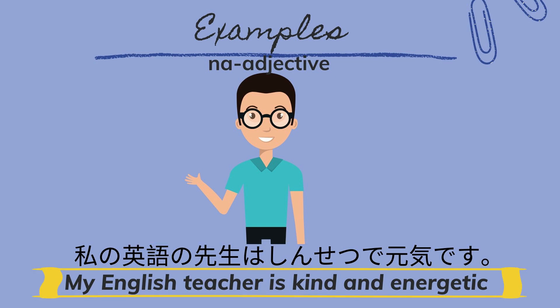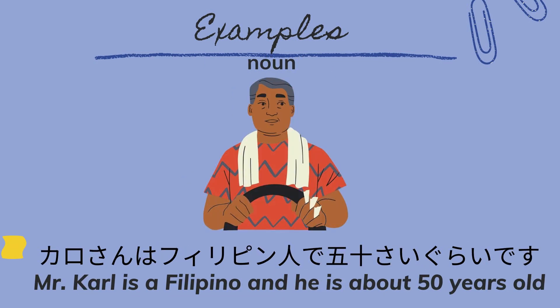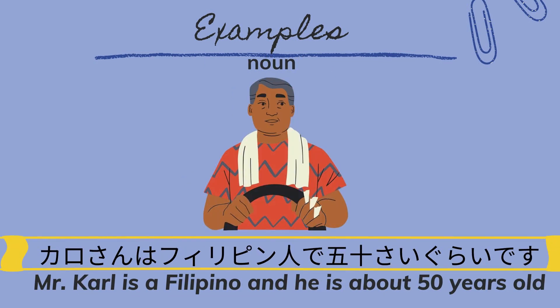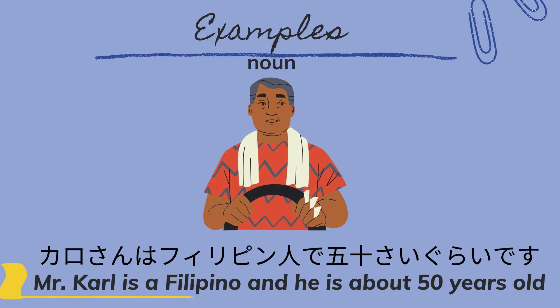The next one is 'Karo san wa Firipin jin de, gojussai gurai desu,' meaning Mr. Carl is a Filipino and he is about 50 years old.